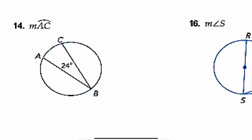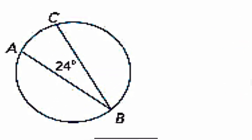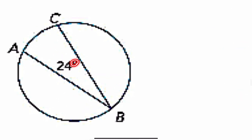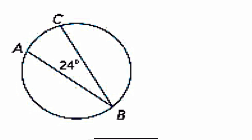Number 14: the measure of arc AC. The angle here is 24 degrees. If I know this angle is 24 degrees, how long is that arc? You take the angle and multiply by 2.